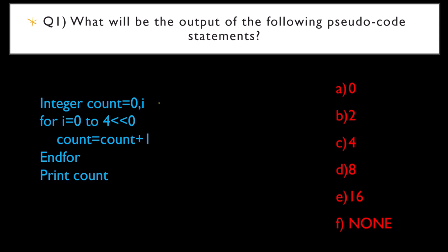Here, the variable count will be created with value 0. The variable i will be created with no value inside it. Next, when we come to the for loop, this is where a lot of students get confused. For i equals 0 to 4 less than less than 0 - this operator is called the left shift operator.